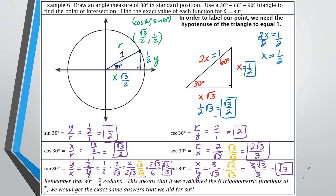Like we mentioned before, 30 degrees is the same as π/6 radians. So if a question asks for the cosine of 30° or the cosine of π/6, you need to know those two angles are equivalent.